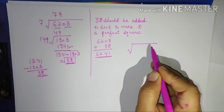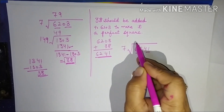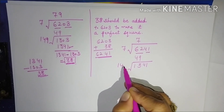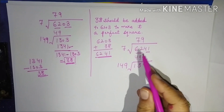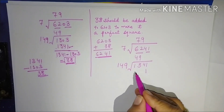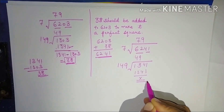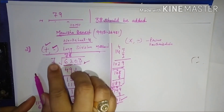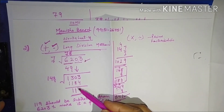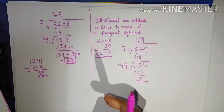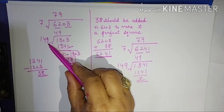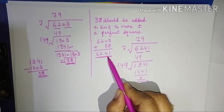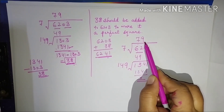Finding the square root of 6241: pairing gives 62 and 41. 7 × 7 = 49, remainder 13, bring down 41 giving 1341. With 149 × 9 = 1341, remainder is 0. So the square root of 6241 is 79. To summarize: for subtraction, use the remainder directly. For addition, take the next bigger digit, find the difference from the current remainder, and add that difference to the given number.